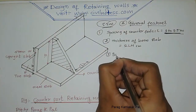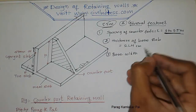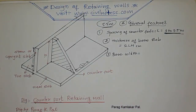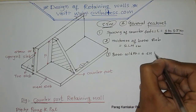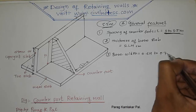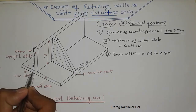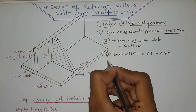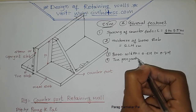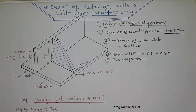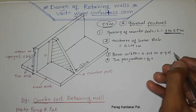The base width required for the counterfort retaining wall is given by the formula 0.6H to 0.7H, where H is the total height. The toe projection, which is the distance from the front of the base to the stem, is given by one-fourth of the base width, i.e., B/4.